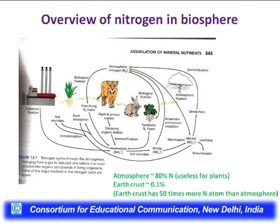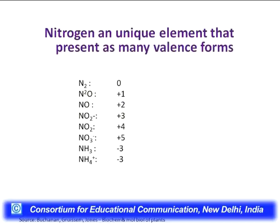Nitrogen is a unique element present in biological systems. One very interesting feature is the presence of nitrogen in a multivalent form. Nitrogen's valency in N₂ is 0, in N₂O is +1, NO is +2, NO₂⁻ is +3, NO₂ is +4, NO₃⁻ is +5, and NH₃ and NH₄⁺ are both -3. The valency of nitrogen can range from -3 to +5, making it a very unique element capable of diverse biological functions.